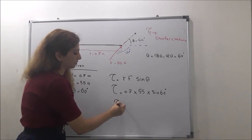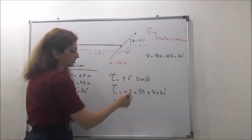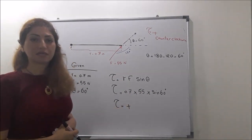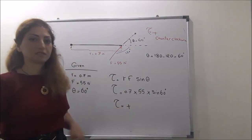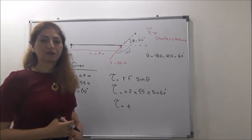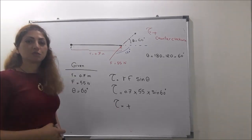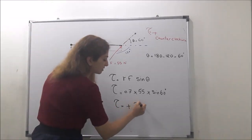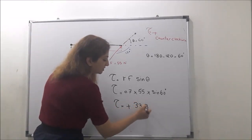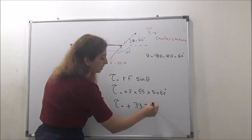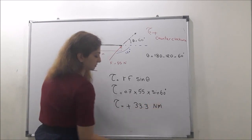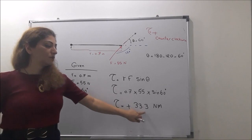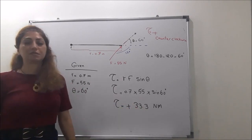The torque equals — I know it is counterclockwise, so it should be positive. It is anti-clockwise, so it should be positive sign. If you do the math, you will find the size of this torque is 33.3 Newton meters. Positive 33.3 Newton meters.